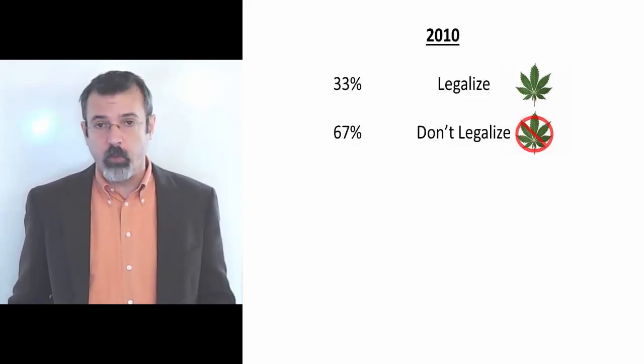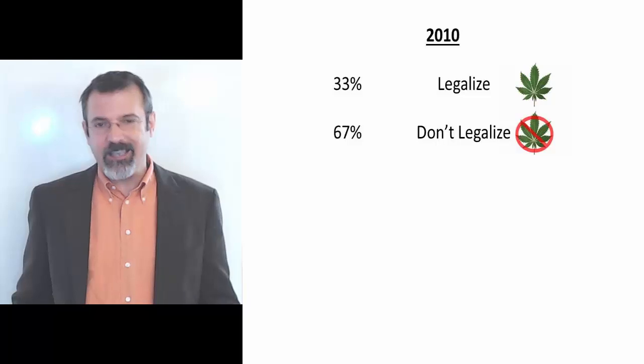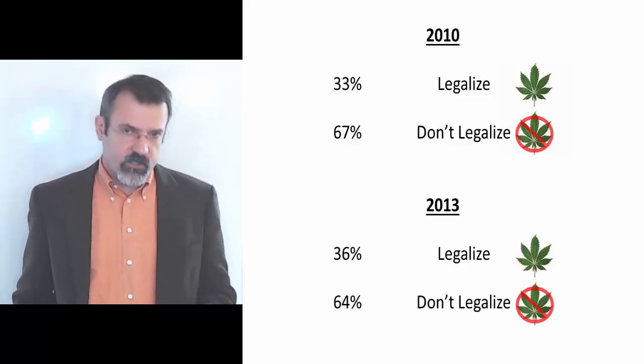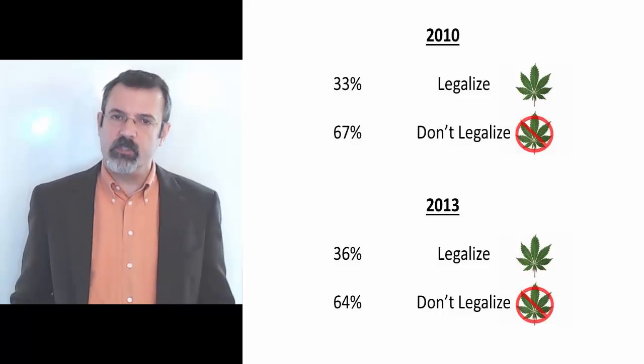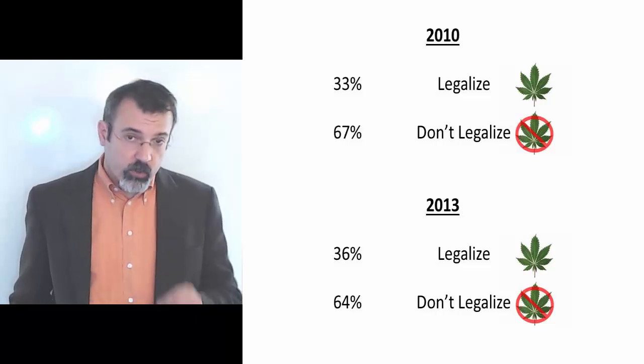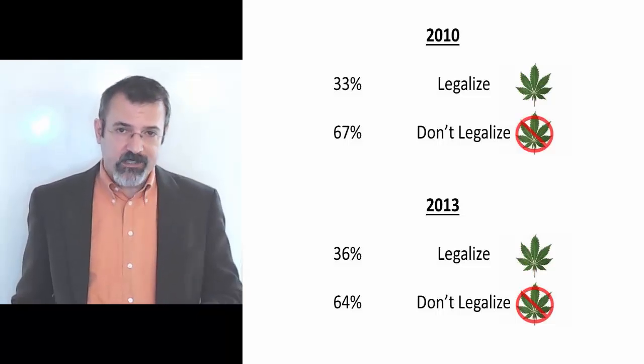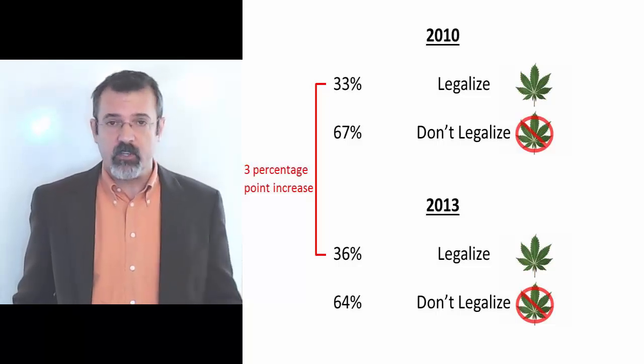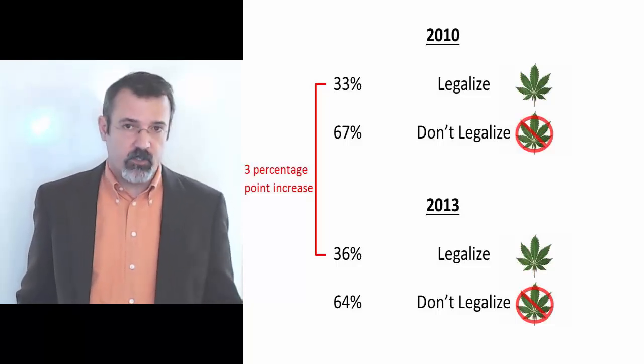The Associated Press then repeated this poll in 2013, again asking Americans whether they favor the legalization of marijuana. This time they found that 36% of Americans did favor legalization, while 64% did not. So looking at these two polls, we see a 3% increase in favoring of legalization of marijuana from 2010 to 2013.